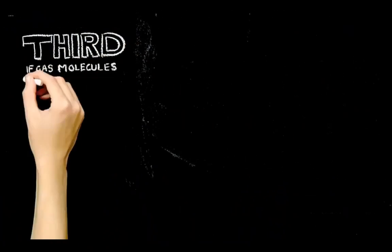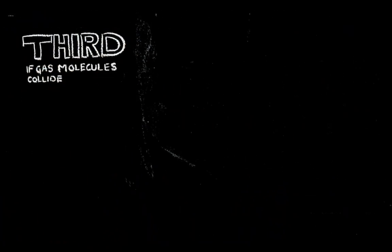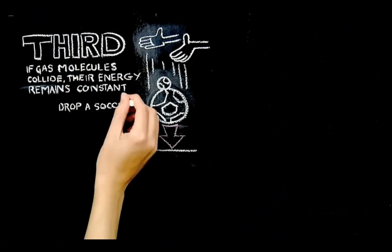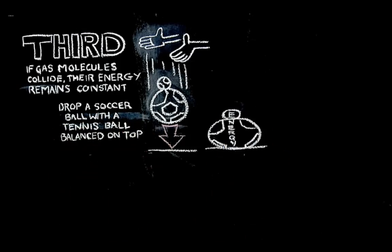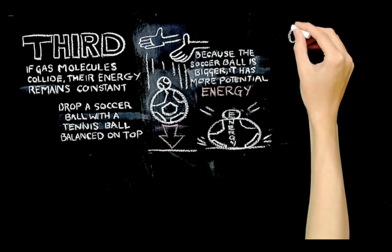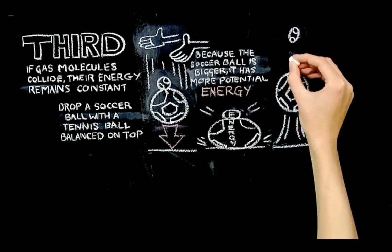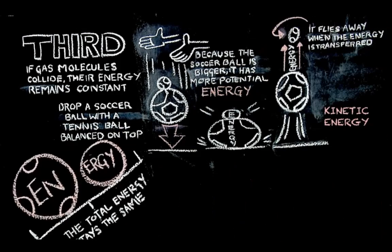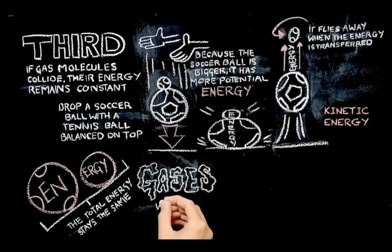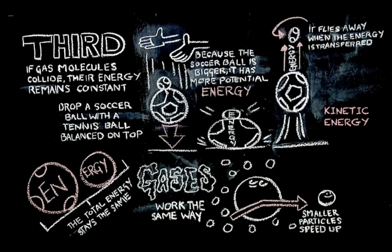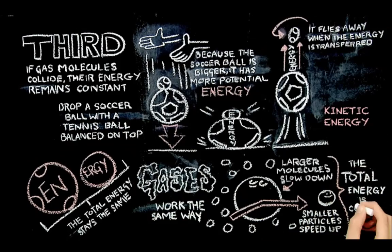Third, if gas molecules collide, their energy remains constant. An easy way to demonstrate this is by dropping a soccer ball with a tennis ball balanced on top — the energy from the larger ball is transferred to the smaller tennis ball and it flies away; the total energy stays the same. Gases work the same way: if they collide, smaller particles will speed up, larger particles will slow down, and the total energy is constant.